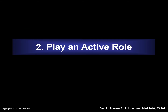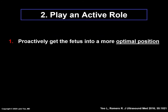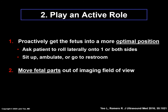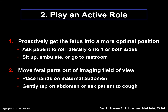It is important to play an active role when acquiring STIC volumes for FINE. For example, one should proactively get the fetus into a more optimal position. This can be accomplished by asking the patient to roll laterally onto one or both of her sides, have her sit up, ambulate, or go to the restroom. It is also helpful to move fetal parts out of the imaging field of view when applicable — this can be done by placing one's hands on the maternal abdomen, or by gently tapping on the abdomen or asking patients to cough to get the baby to move.